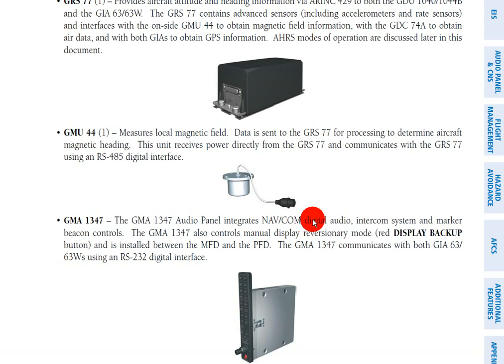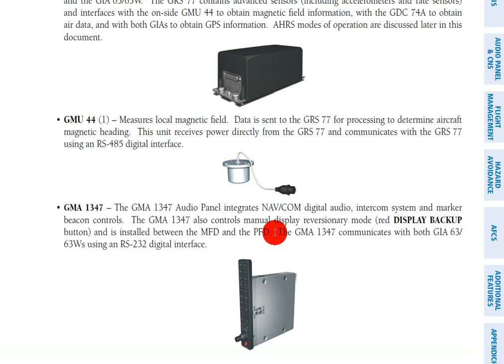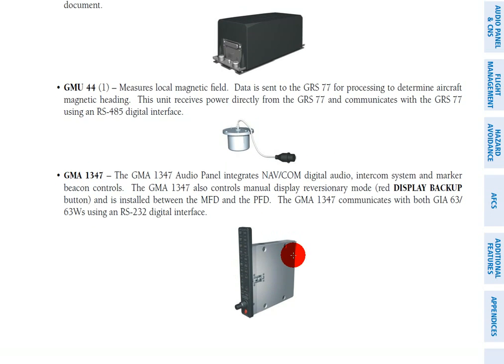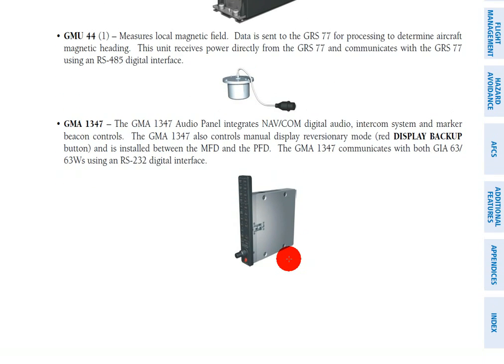Next, we need to control the audio information for the G1000, because the primary flight display and multifunction display don't have buttons for that. Those buttons are on the audio panel, the GMA 1347. It also has the red button in case you need to go to reversionary mode in an emergency.